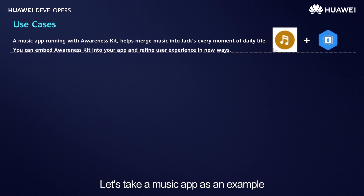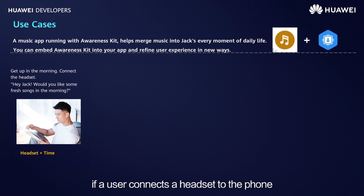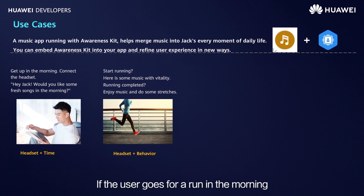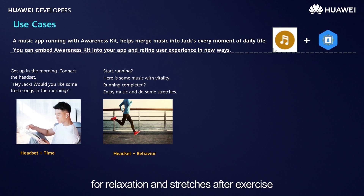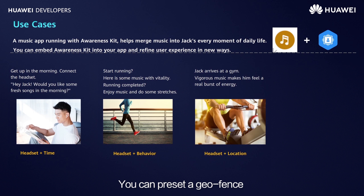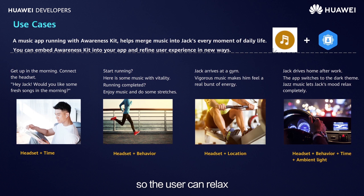Let's take a music app as an example. Using Awareness Kit, your music app can bring a new experience to users. If a user connects a headset early in the morning and the weather is good, you can recommend a lively playlist. If the user goes for a run in the morning, you can recommend up-tempo music. If the user's running pace slows down, you can recommend music suitable for relaxation after exercise. You can preset a geofence to start playing energetic music when a user arrives at the gym. As night falls, the user drives home after work, and you can recommend music based on driving status so the user can relax.